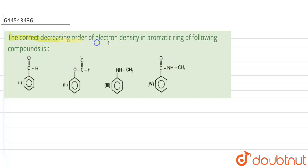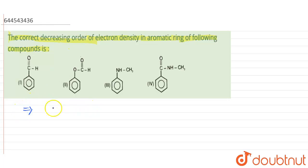In this question, we are given four compounds and we have to determine the correct decreasing order of electron density in the aromatic ring. The electron density will be determined by the functional group or any group which is attached to the benzene ring.